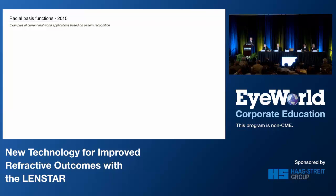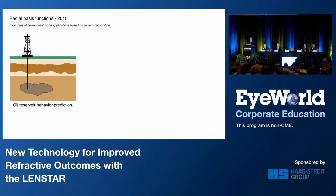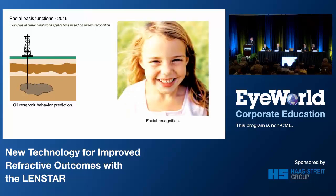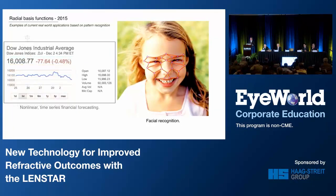Radial basis functions are a pretty exotic mathematical term, but it turns out that probably every single one of you with an iPhone in your pocket is using radial basis functions — they're all around us. Near the Gulf of Mexico, where the oil industry has a big presence, radial basis functions are used to map how an oil field behaves. The agriculture industry, the automotive industry, and the motorcycle industry use radial basis functions almost ubiquitously for things like spark plug timing and engine calibration. When law enforcement wants to find the bad guy, they use radial basis functions for pattern recognition to identify facial features. For forward-forecasting financial people, this is standard operating procedure.